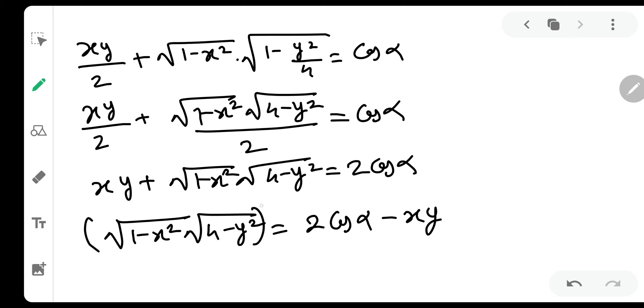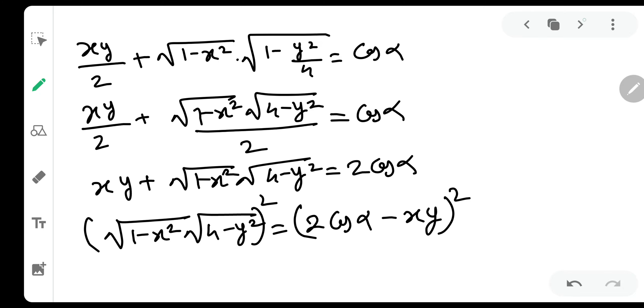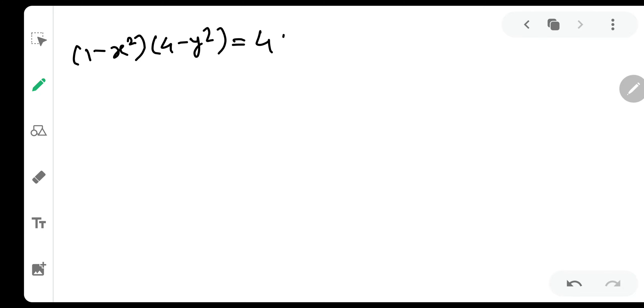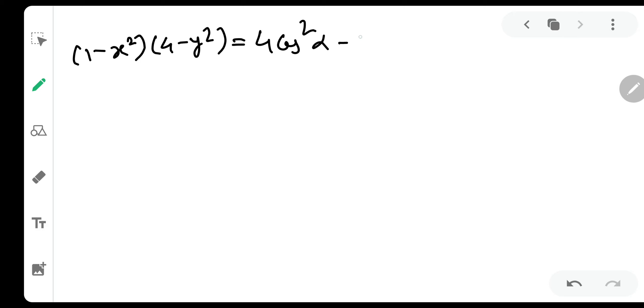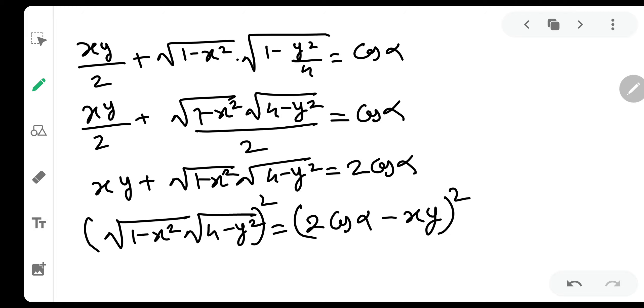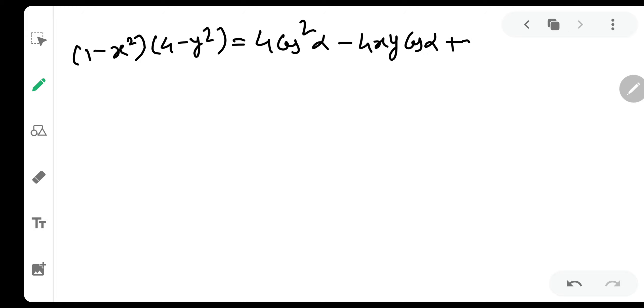Then I will put xy on some other side and this will be 2 cos alpha minus xy. Now, let me square both sides. Now, it helps for our question because roots will be gone. So left side roots will be gone and the sum will become super smooth. 1 minus x square and 4 minus y square equals what? Let us see, 2 cos alpha will become 4 cos square alpha minus 2ab. So it will be 2 into 2 cos alpha into xy. So minus 4 into xy into cos alpha and then xy the whole square. So it will be x square y square.